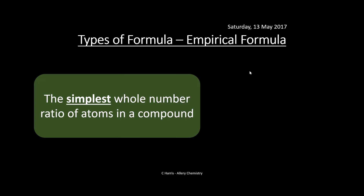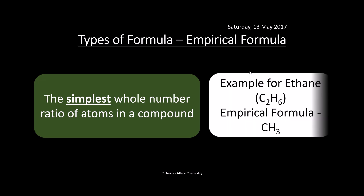Empirical formula is the simplest whole number ratio of atoms in a compound. So for example, ethane, which is C2H6 as the molecular formula — its empirical formula, the simplest whole number ratio, will be CH3. Don't worry — this doesn't look chemically right, but empirical formulas are just a whole number ratio, so don't worry if it looks a bit strange.